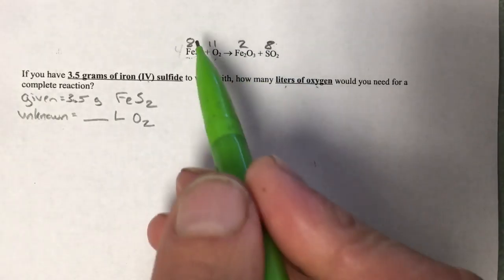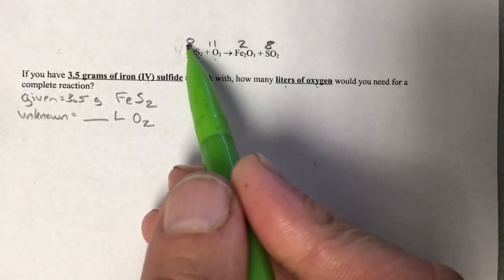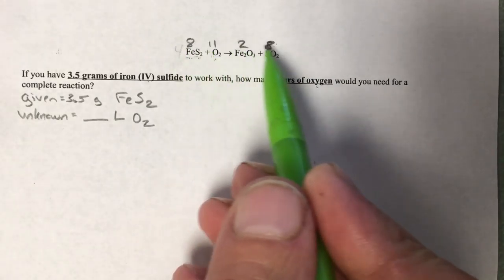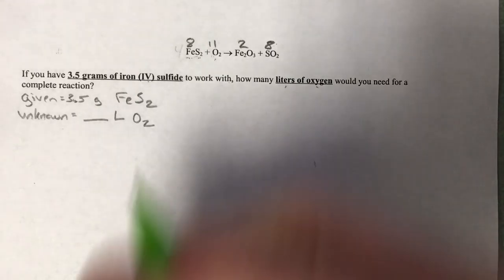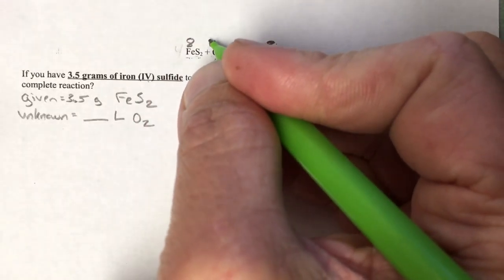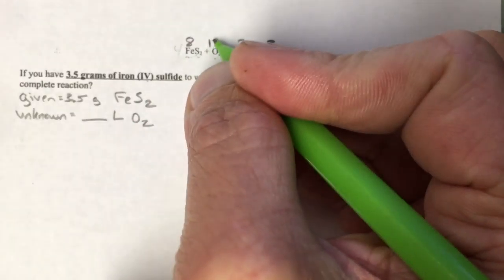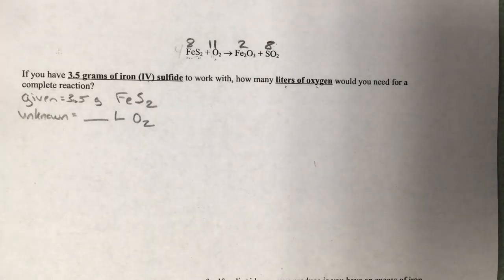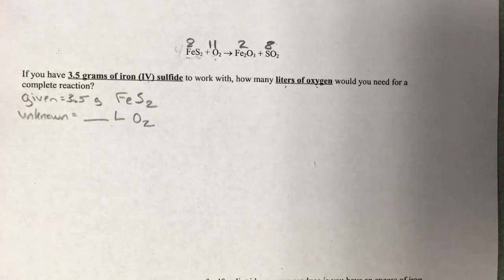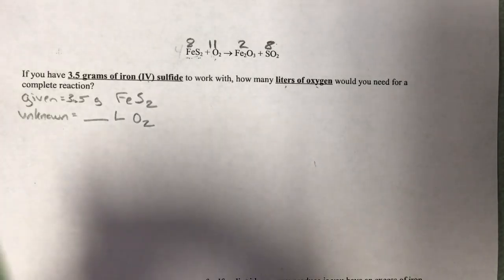By the way, that equation was not balanced. The coefficients are 8, 11, 2, and 8. Once that equation is balanced — and it's a pretty good balancing problem with lots to think about — those are the coefficients: 8, 11, 2, 8. They're not on the paper already; you need to find them from the balanced equation.